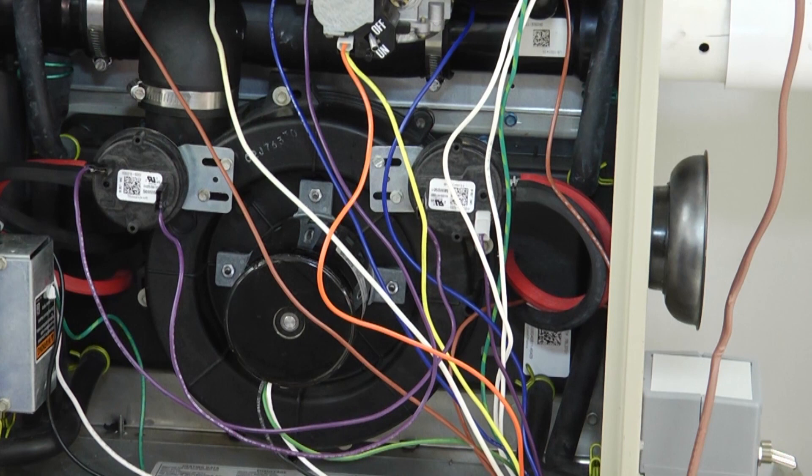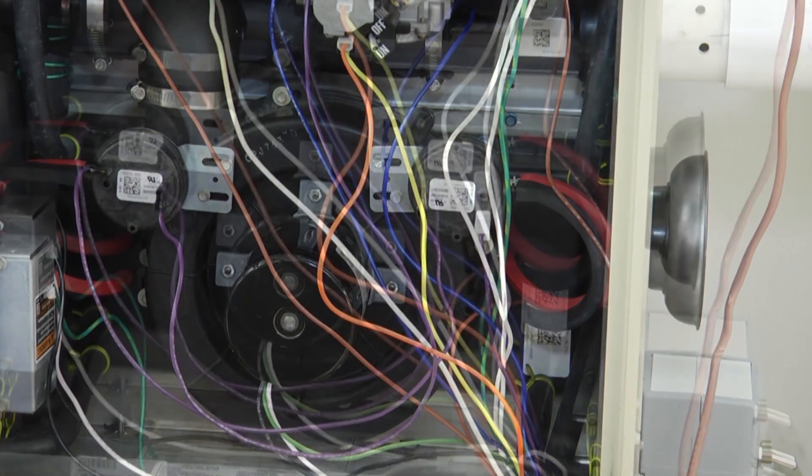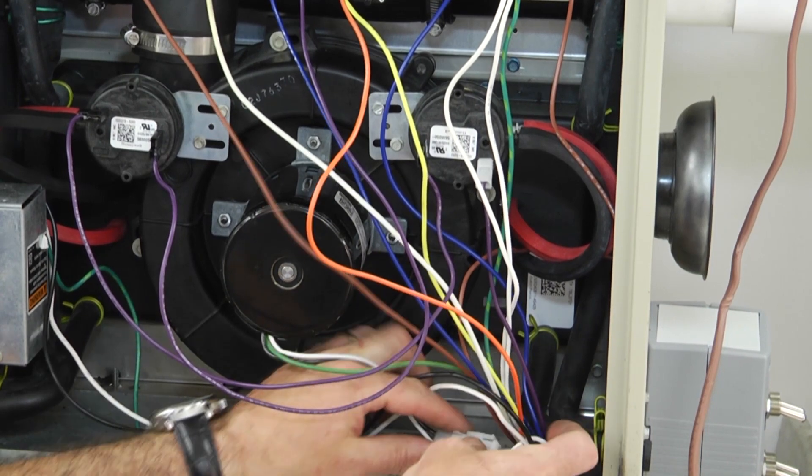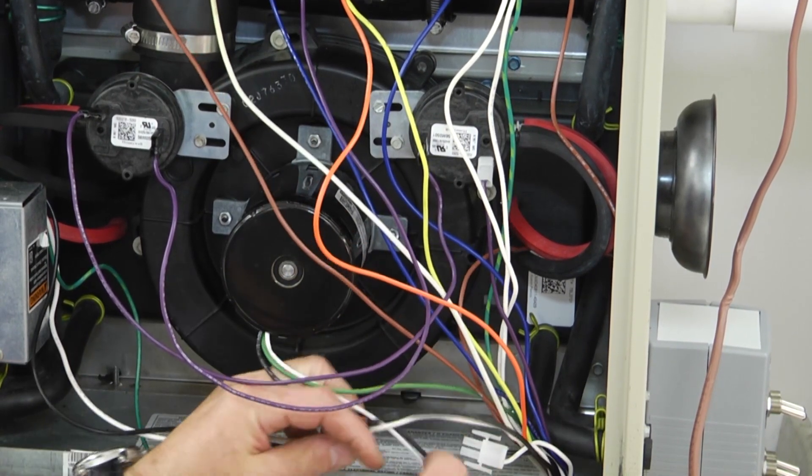First thing I'm going to want to do is obviously disconnect power to the furnace. Make sure you got power disconnected. You're going to locate your power leads, right here in this wiring harness. It's your power to the motor.